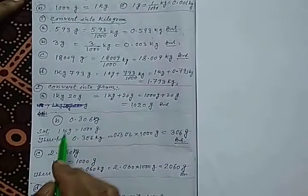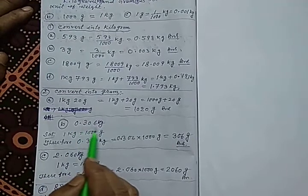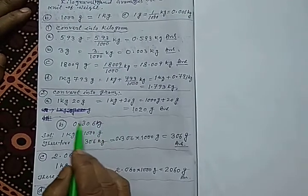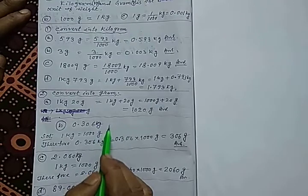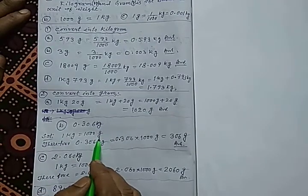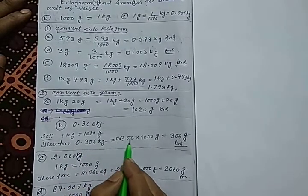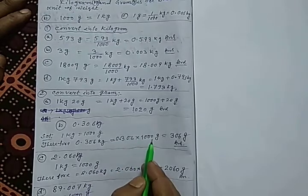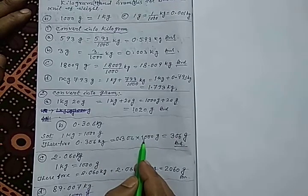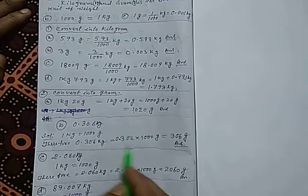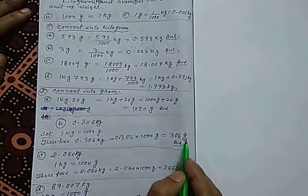In B, it is given 0.306 kg to be converted into gram. When kg is converted into gram, we multiply by 1000. Since 1 kg equals 1000 gram, 0.306 kg multiplied by 1000 — there are three zeros, so the point shifts three digits to the right — giving 306 gram.